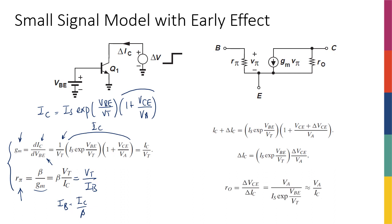Now the last thing to discuss is how a change in the collector-emitter voltage changes the collector current. Remember, the way we developed the small signal model was: perturb the voltage between every two terminals while keeping the other terminal constant, then look at how that perturbation affects the current. Last time, when we perturbed the collector-emitter voltage, we assumed a perfect current source, so any changes in collector voltage didn't matter. But now we know it does matter a little bit — because of the early effect.